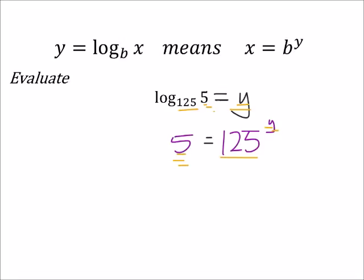Okay, so 125 to what power is 5? For a problem like this it may take a little bit of intuition because 5 is less than 125. So essentially what we know is we're going to have to have a root of 125. So 5 would be what root of 125?